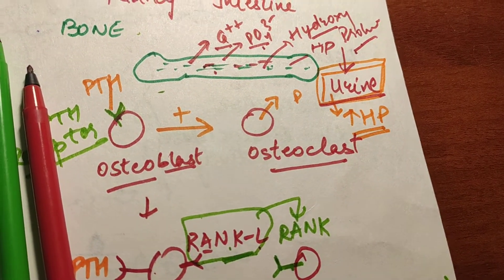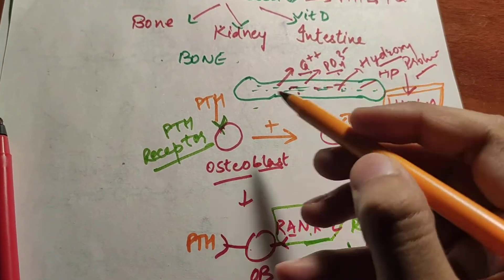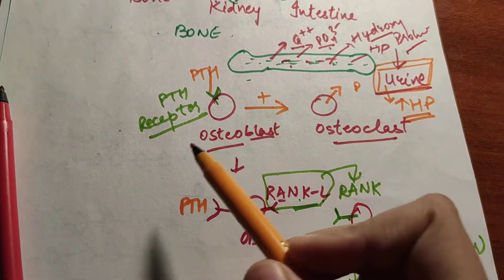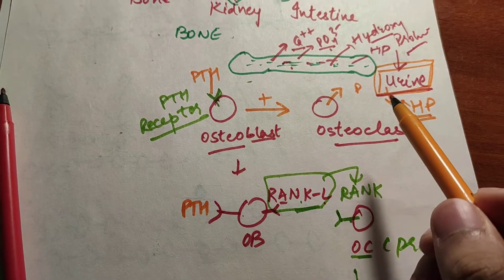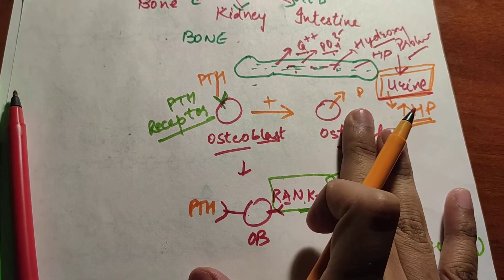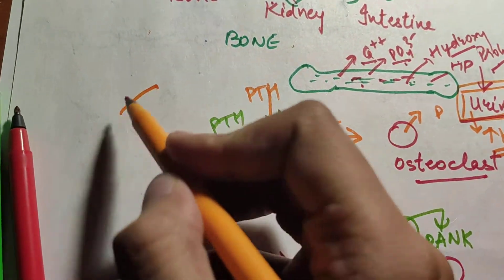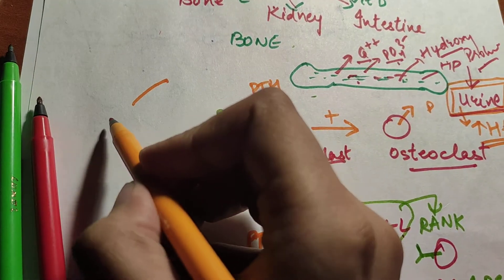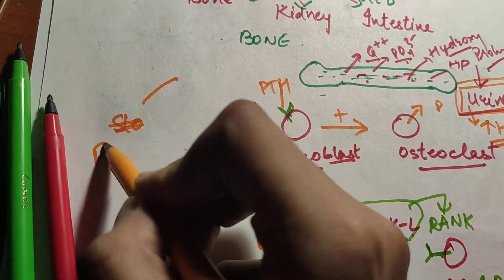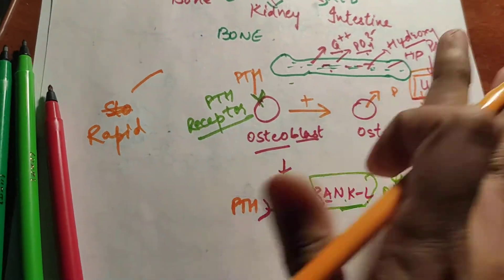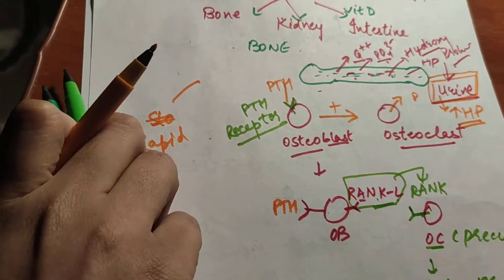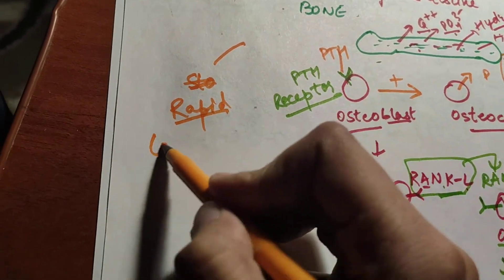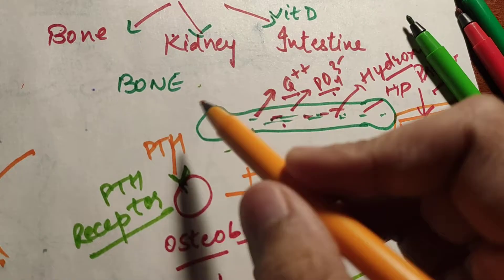This mobilization of calcium and phosphate through the RANKL/RANK and osteoclast activity on bone is the slower phase. There is also a rapid phase — the rapid phase occurs first, then the slower one follows.